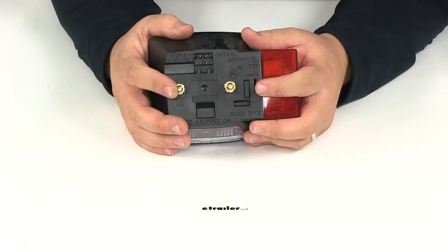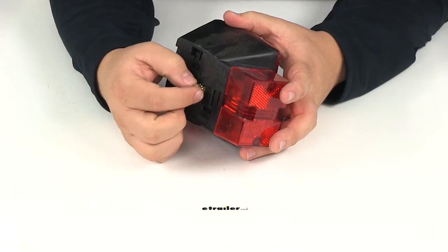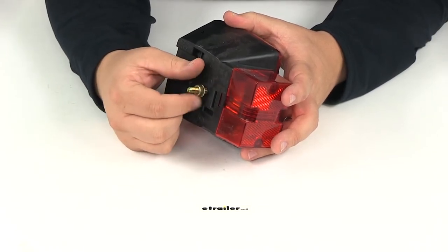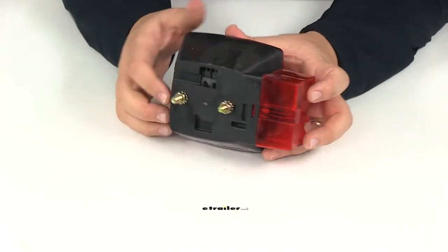The unit's going to ground through the mounting studs. It's got a nut with a star-shaped washer attached to it. That way it's going to dig into the surface and make a nice solid connection for the ground.